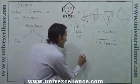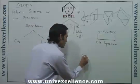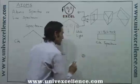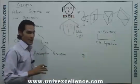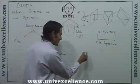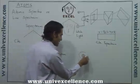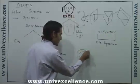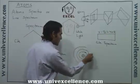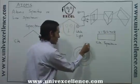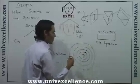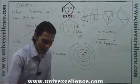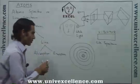A line spectrum means only a few lines are visible on the detector or screen. To understand why, consider the atomic structure. For simplicity, we consider the hydrogen atom: the nucleus at the center, then the first orbit (n=1), the second orbit (n=2), the third orbit (n=3), and the fourth orbit (n=4), and so on.